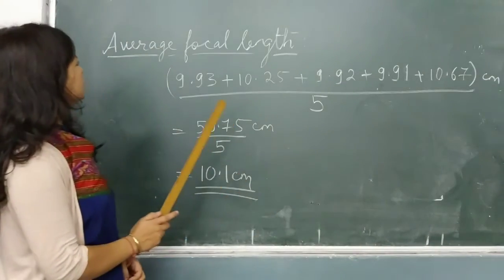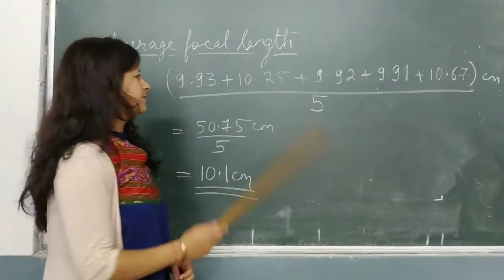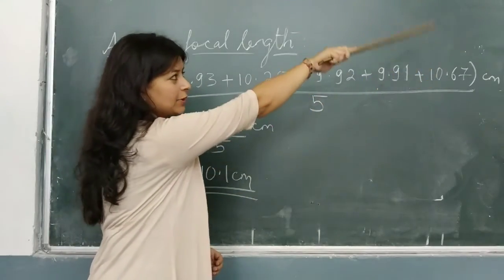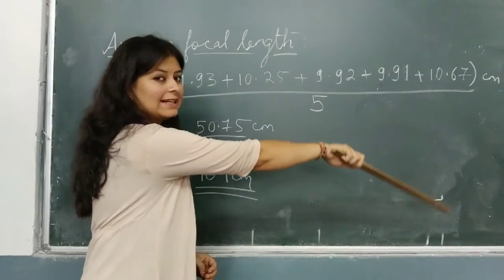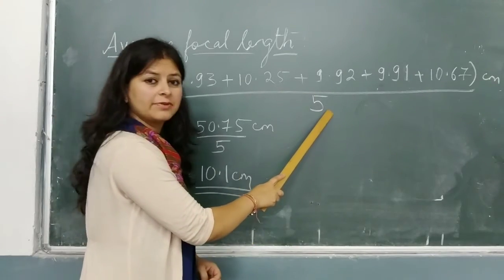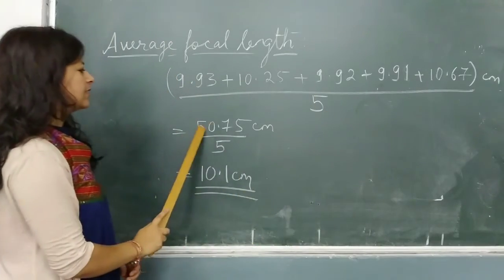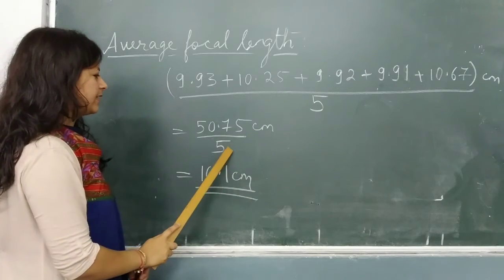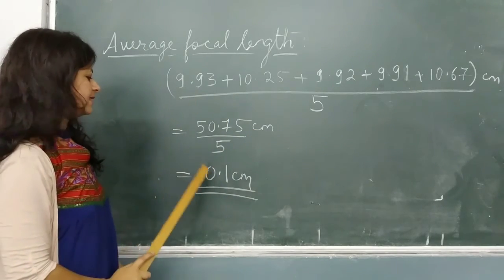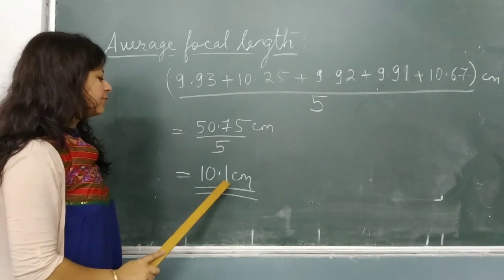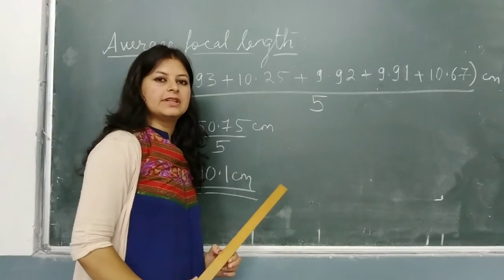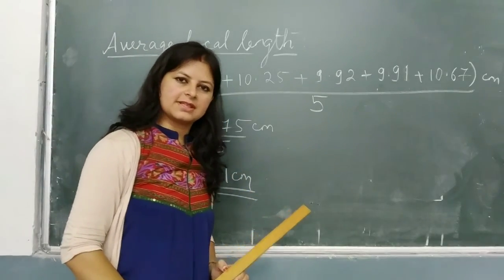To find the average focal length, it's very simple: you are just going to add up all the 5 values you have obtained and divide by the number of observations, which is 5. You get 50.75 centimeters divided by 5, and your focal length for the given convex lens is 10.1 centimeters. That is how you proceed with the first experiment for your course. Thank you.